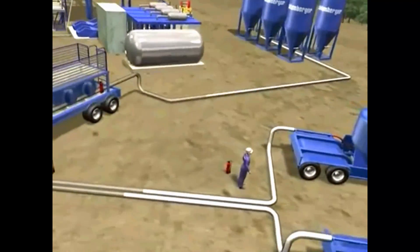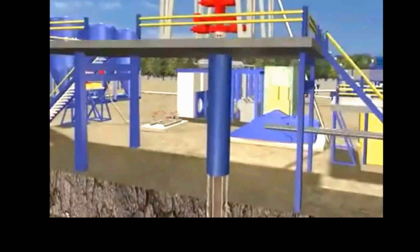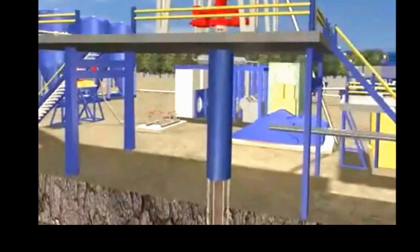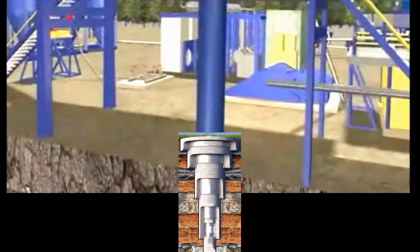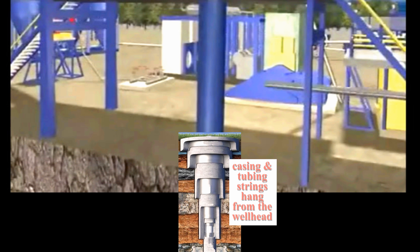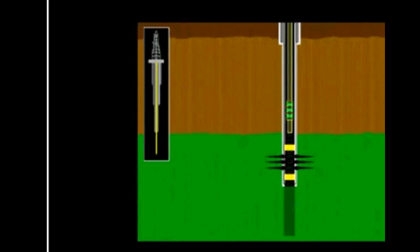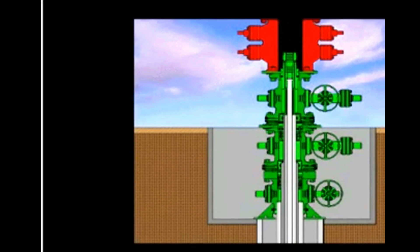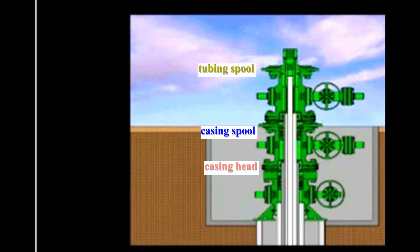During the process of preparing a well for production, the surface casing is mounted on the wellhead. Its function is to seal off the annular spaces between the strings. Each additional casing string and tubing string are then hung from the wellhead as they are run. Once the well is completed, however, access to the wellhead is no longer required, so they are usually placed just below ground level.